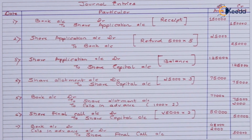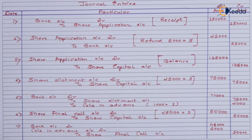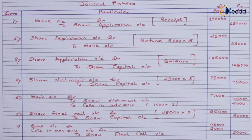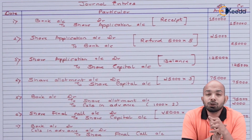This is all we had to discuss regarding calls in advance. I hope this video has given you clarity on how calls in advance journal entries are passed and how interest is calculated for the relevant tenure at the rate provided in the question. If no rate is given, assume 6% per annum.